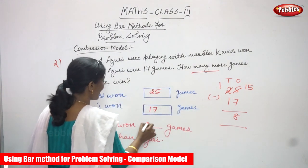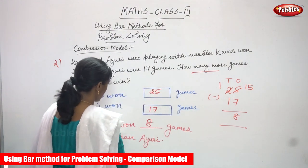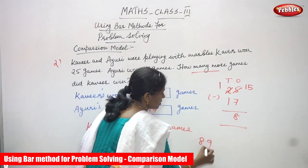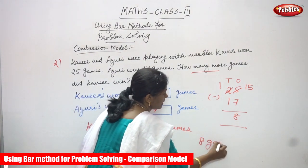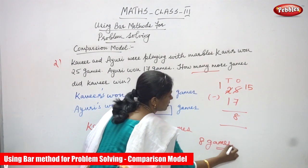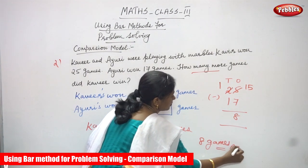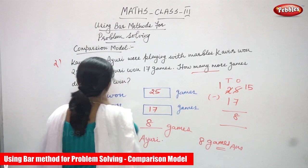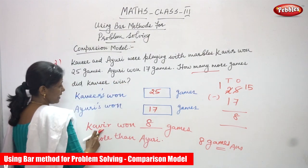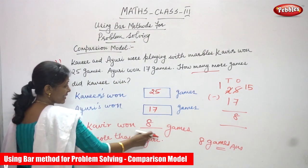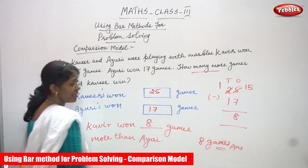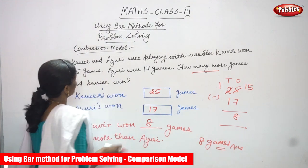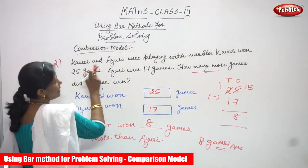So Kaveer won 8 games more than Ayuri — 8 games is the exact right answer. The question was 'how many more games did Kaveer win?' and the answer is Kaveer won 8 games more than Ayuri.